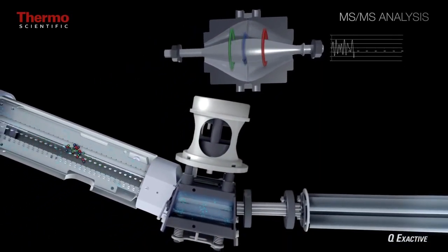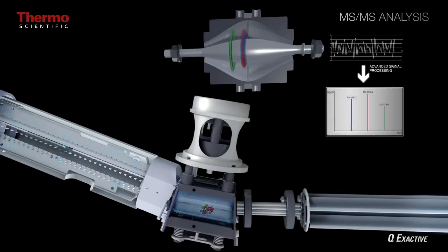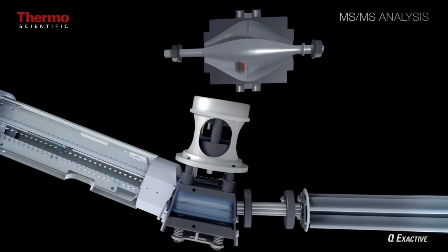When this scan is completed, another set of ions are selected for subsequent fragmentation in the collision cell and detection in the orbitrap. This process occurs for all ions that are to be fragmented over and over again.